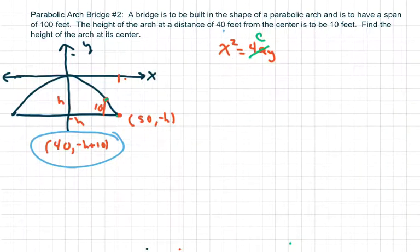Let's do two different Ys. So we're going to get 50 squared equals C times negative H. That's your first equation.